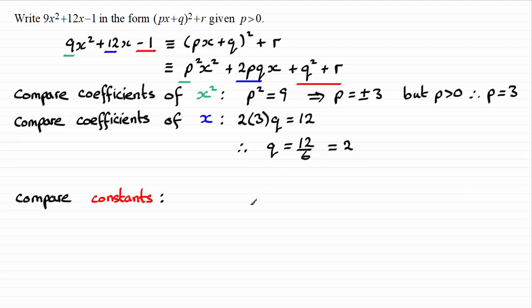So what we have got is 2 squared for q squared. And then plus r must equal the negative 1 that we have here. So we've got 4 here. Plus r equals minus 1. And if we take 4 from both sides, we end up with r equals minus 1 minus another 4, which clearly is negative 5.